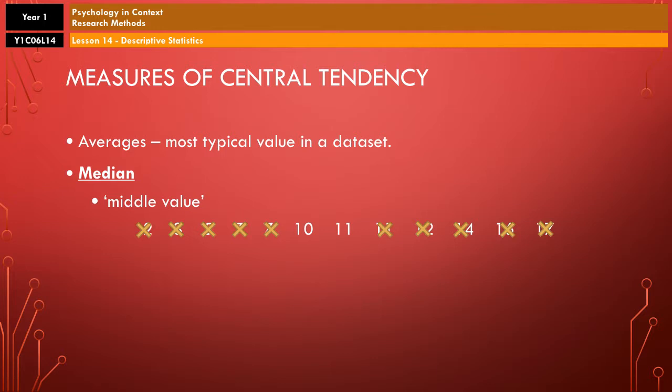Just like that, and then you get to the middle. Now, with a bit of luck, there'll be one number left in the middle, and that will be your median. Sometimes there are two, but that's not the end of the world, because you just take the two and go halfway between them. So, in this case, it would be 10.5. Or you can add them together and divide them by two. That would also work just fine.